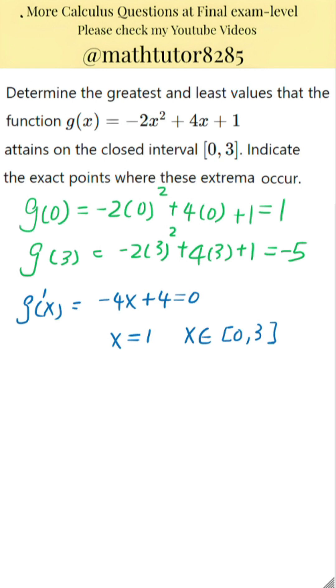This value of x is within our interval from 0 to 3, so we must consider it. Evaluate the original function at x equals 1. Plugging 1 into the function gives negative 2 times 1 squared plus 4 times 1 plus 1. That equals negative 2 plus 4 plus 1, which is 3.